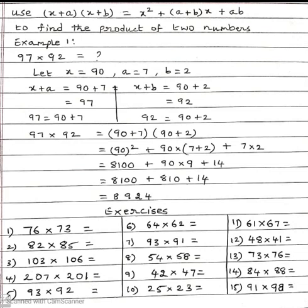So using the formula (x+a)(x+b) = x² + (a+b)x + ab, we can find products like this.